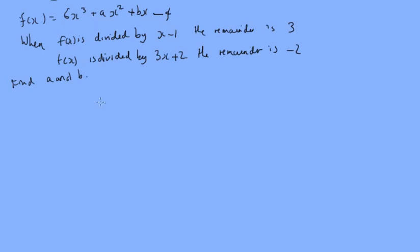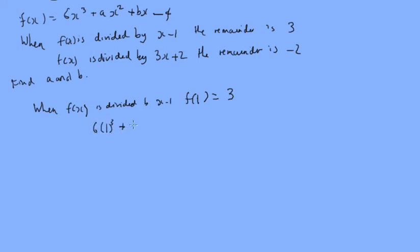So this is our f of x. When f of x is divided by x minus 1, that means f of 1 must equal 3. So what is f of 1? We'll have 6 times 1 cubed plus a times 1 squared plus b times 1 minus 4, and that equals 3. That's going to give us a plus b equals 1, and we're going to call that equation 1 because we're going to end up with a simultaneous equation.